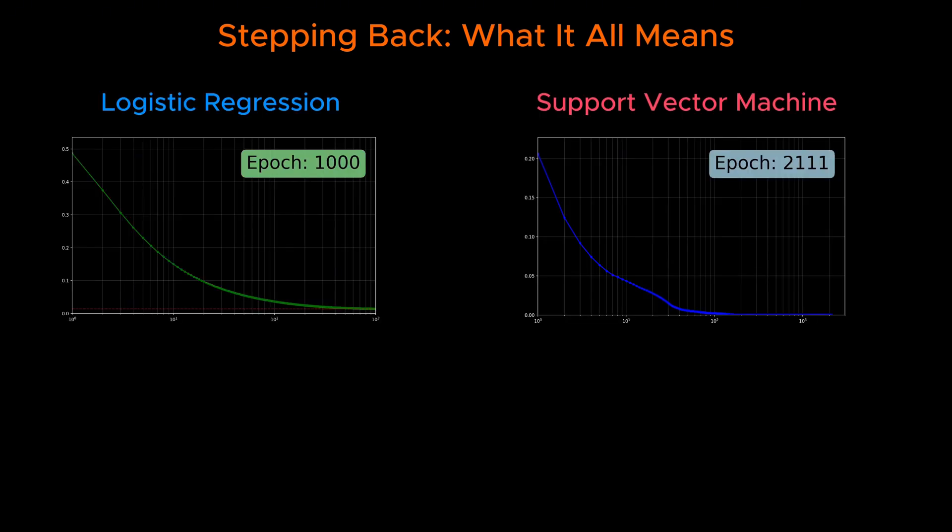At this point, a natural question arises. If logistic regression and SVM share the same probabilistic foundation but have different loss functions, whose loss function is better? The truth is that no one knows. This is an open question in machine learning research.